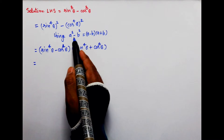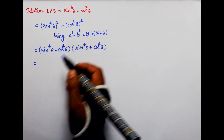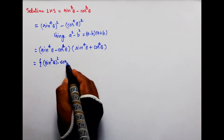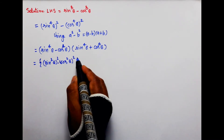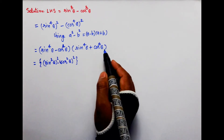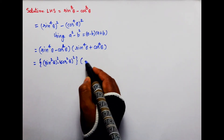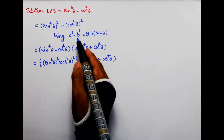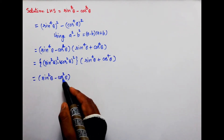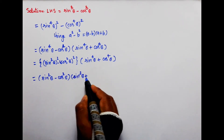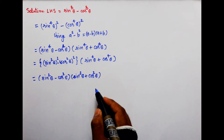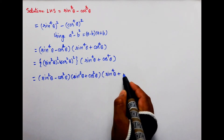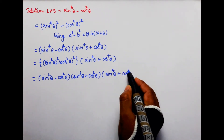Phir iske baad, yahi formula isme use karne waale hain. Ise aise likhenge: (sin square theta whole power 2) minus (cos square theta whole power 2). Iska simplification karenge. Aur sin theta to the power 4 plus cos theta to the power 4 mein dubara yeh formula use karenge.